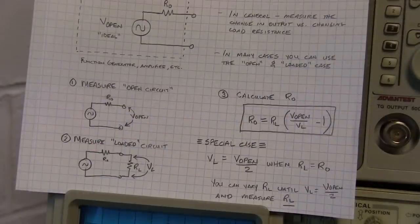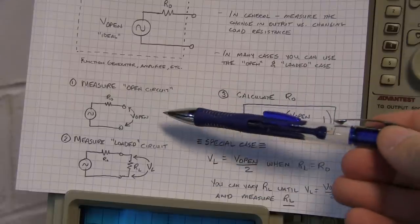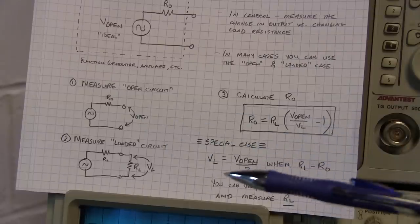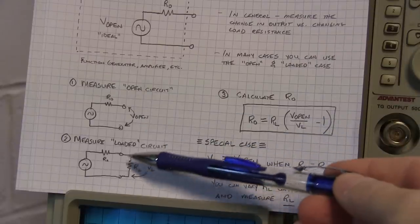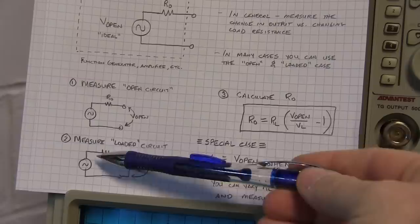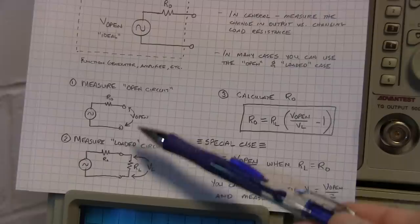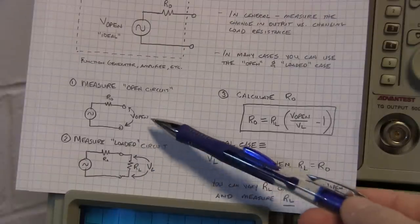So in this first example we'll use a process of simply measuring the open circuit response out of the amplifier with effectively a very high impedance load and then measure the voltage that you get out without changing anything on the generator. Measure the voltage you get out with a load impedance applied.